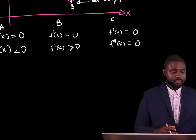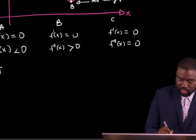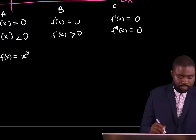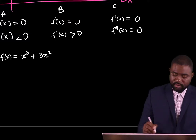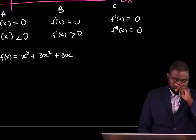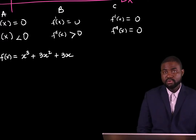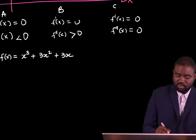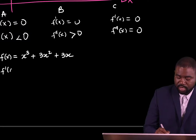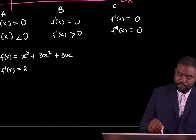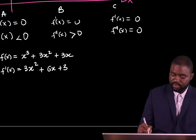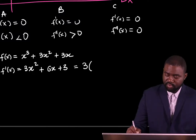Let me do an example. Let's say we have a function f of x equal to x cubed plus 3x squared plus 3x. Our task is to determine what turning points this graph has. So let's start by looking at f prime of x. This is equal to 3x squared plus 6x plus 3, which is the same as 3 times the bracket x squared plus 2x plus 1.